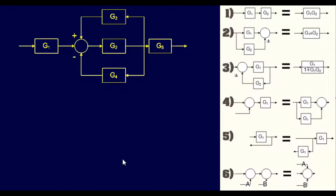For this next problem, we're going to make it slightly more difficult. This one has five blocks and one summing point. The first thing we're going to do is look at the easiest blocks to tackle first. In my mind, I would like to get rid of G4 and G3, because if you eliminate those, the rest of it is just in one flow path. Looking at G4 and G3, they actually mimic one of our rules — the flow is all going in the same direction to the same summing point, which mimics Rule 2.